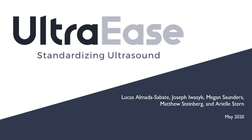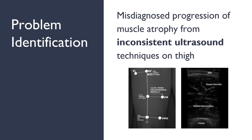Our senior design project is UltraEase, standardizing ultrasound for monitoring muscle atrophy. Muscle atrophy, or the loss of skeletal muscle by muscle wasting, is caused by injury, illness, poor nutrition, and other ailments. The problem we specifically want to address is the misdiagnosis of the progression of muscle atrophy from inconsistent ultrasound practices in the intensive care unit.